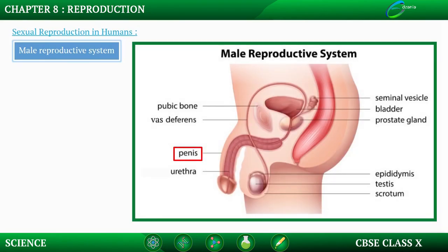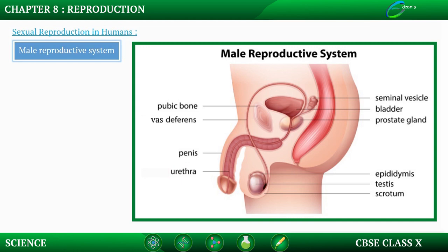The penis is the male external excretory and sex organ. It contains the external opening of the urethra, which is used for urination and to deliver semen into the vagina of a female sexual partner. The testis produces sperms.